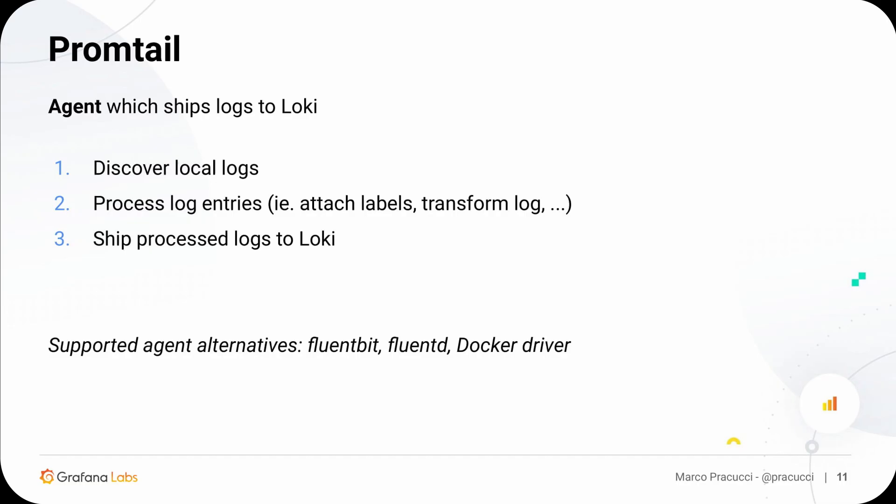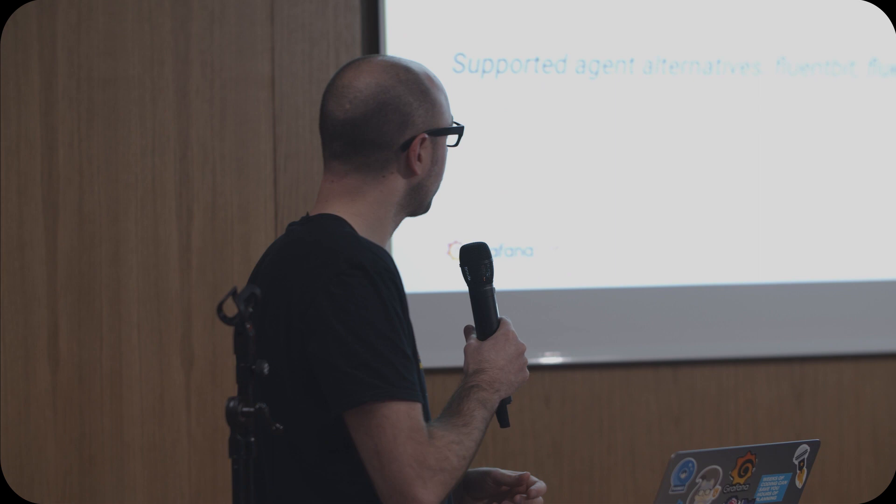Promptail, the agent used to ship local logs to Loki, does three things. First, it discovers local logs. Then for each log file, you can configure a pipeline to process those logs — you can attach labels, transform the logs, drop logs you don't want to push to Loki, and so on. At the end of this pipeline processing, the logs are pushed to Loki.